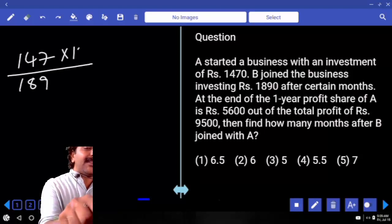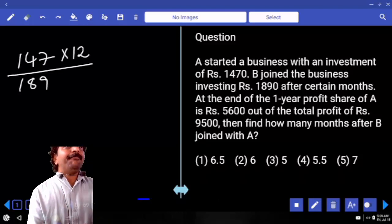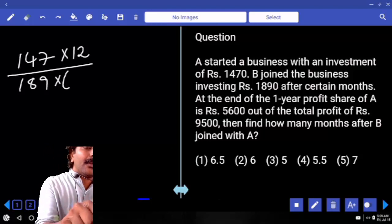A is there for 12 months, right? They said annual profit, so business happened for one year. If B joins after X months, B will be there for 12 minus X.